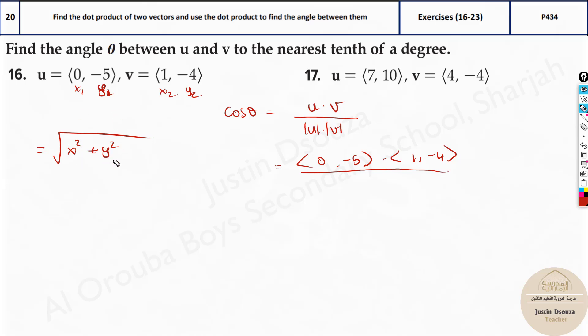Now over here it will be x1 squared, y1 squared. So I'll write directly the magnitude. It's 0 squared plus negative 5 the whole squared. Multiply this entire thing with square root of the next one. 1 squared plus negative 4 the whole squared.